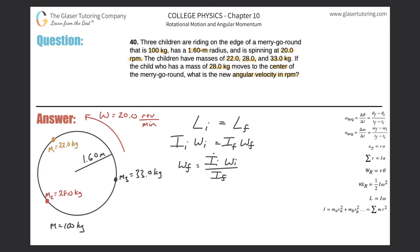To pin down the initial moment of inertia, there are really four objects rotating: the merry-go-round, and the three children. So the initial moment of inertia equals the moment of inertia for the merry-go-round plus the moment of inertia for child one, plus child two, plus child three.